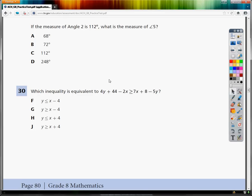This is the 8th grade TCAP practice test for math. This is question number 30. Which inequality is equivalent to 4y plus 44 minus 2x is greater than or equal to 7x plus 8 minus 5y?